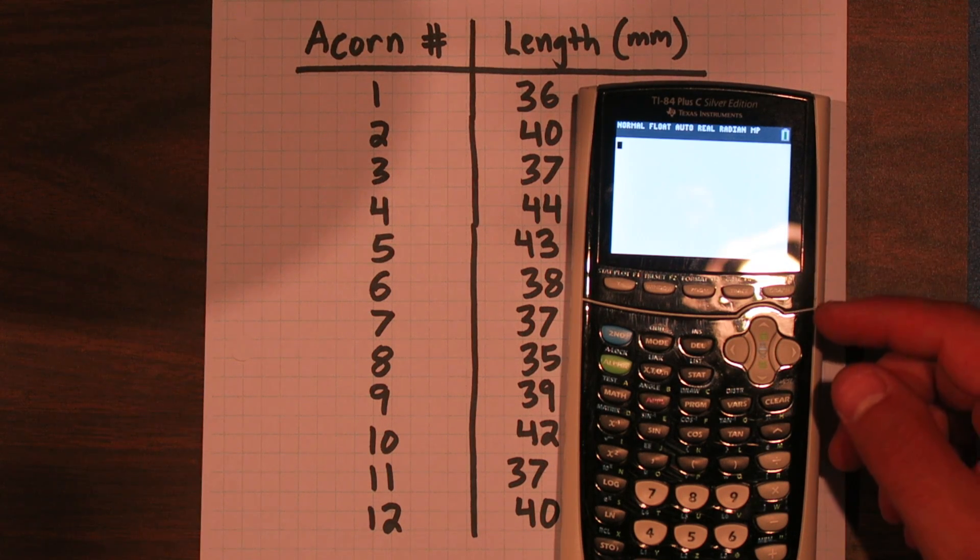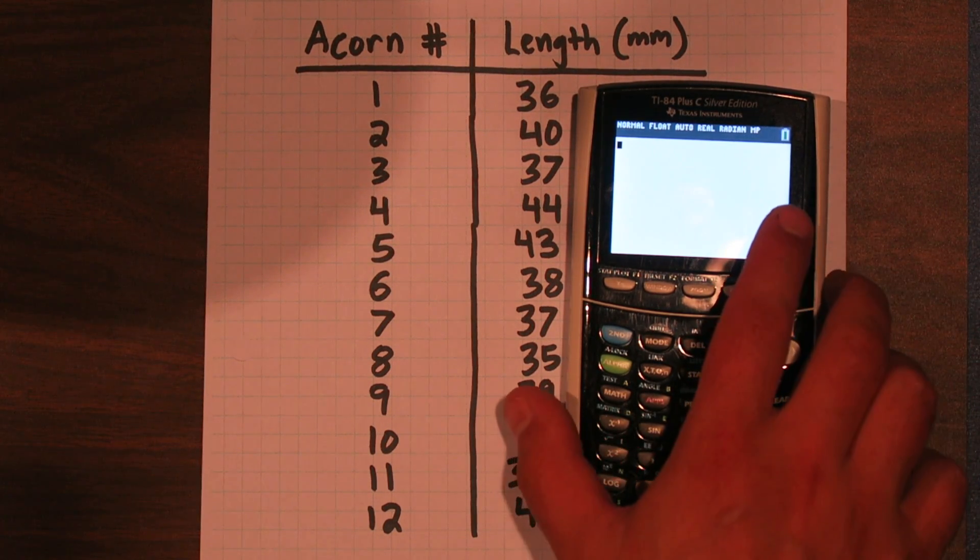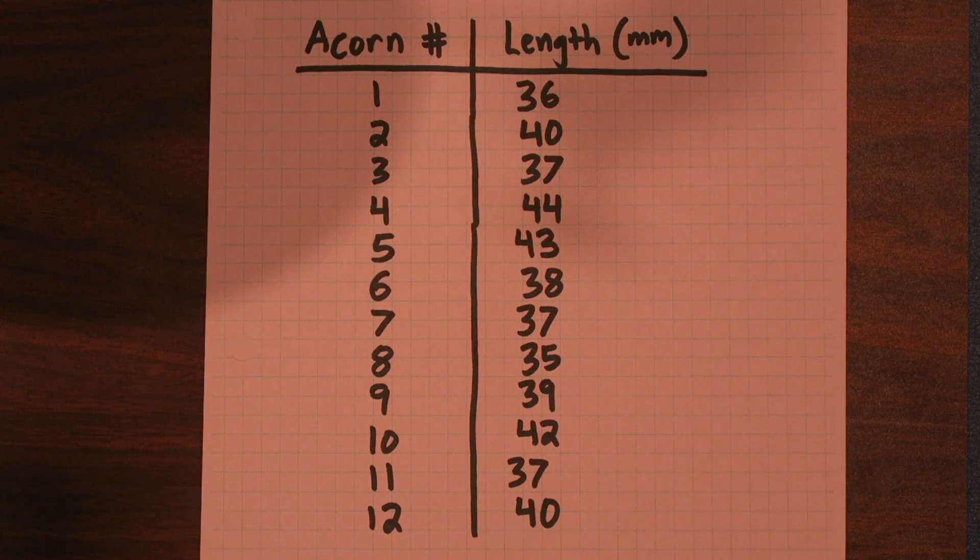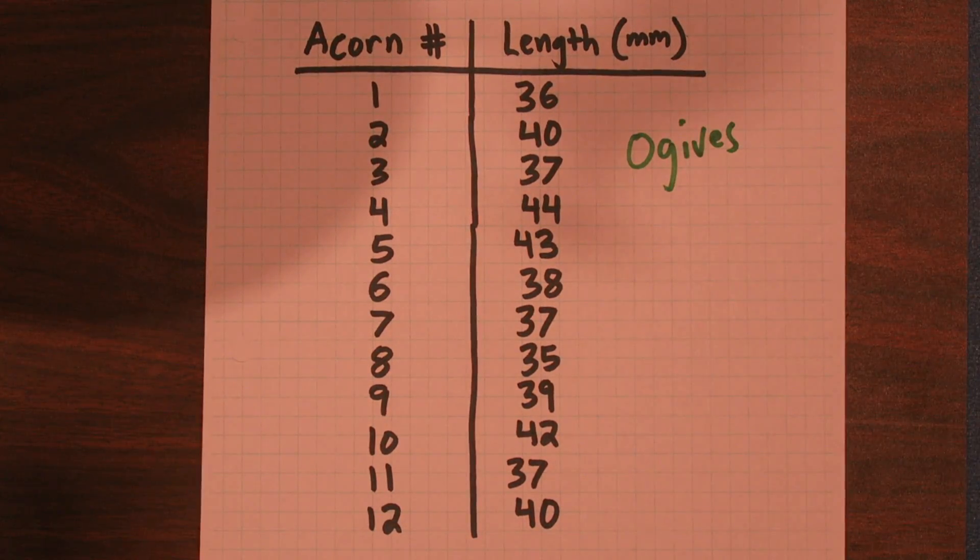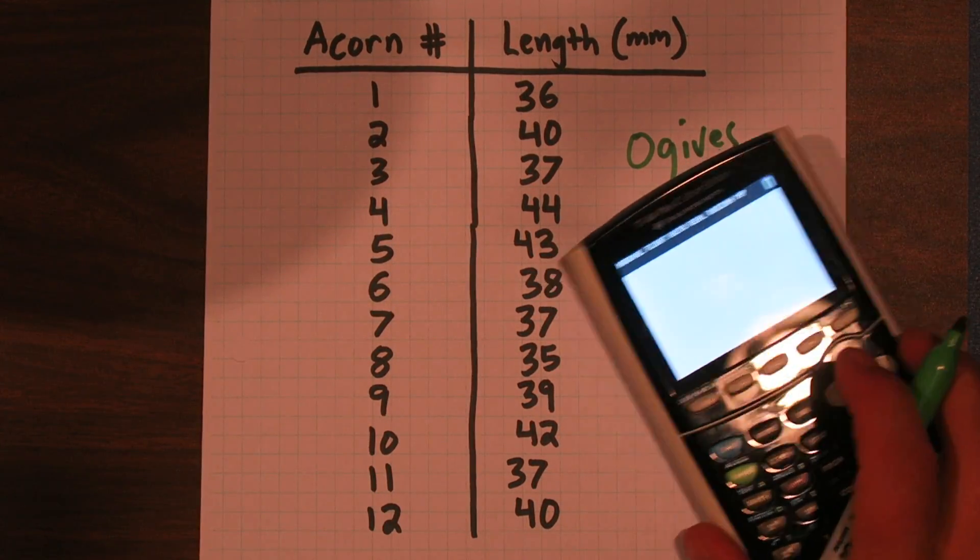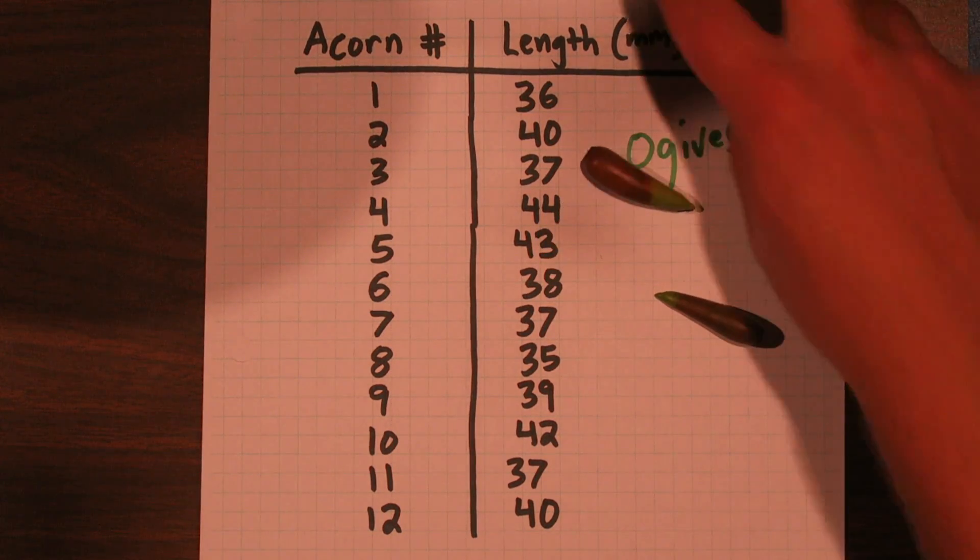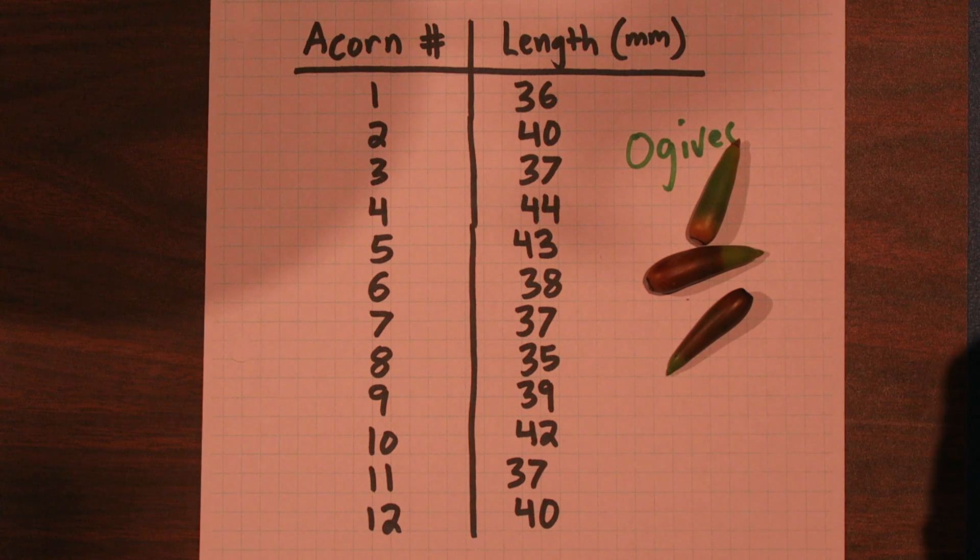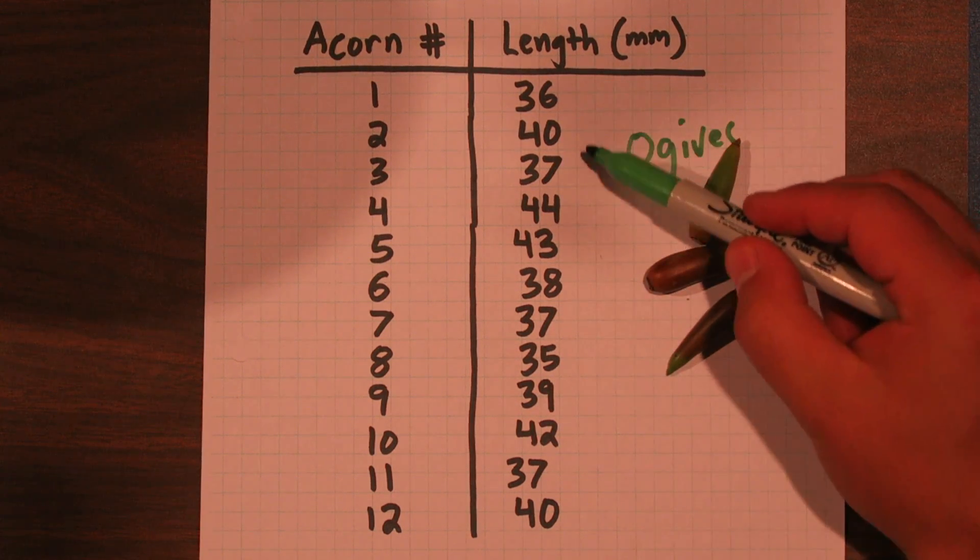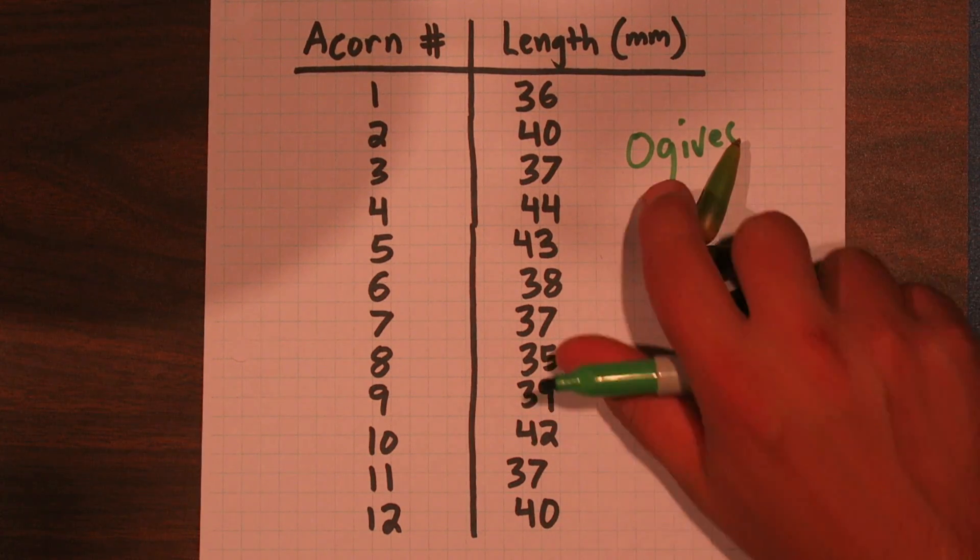Today I'm going to show you how to make cumulative relative frequency plots, also known as ogives, on a TI-84 calculator. Here's my data set. I went out to the yard and collected 12 acorns. They're fairly consistent in length. Here are the lengths of the 12 acorns I found in millimeters.